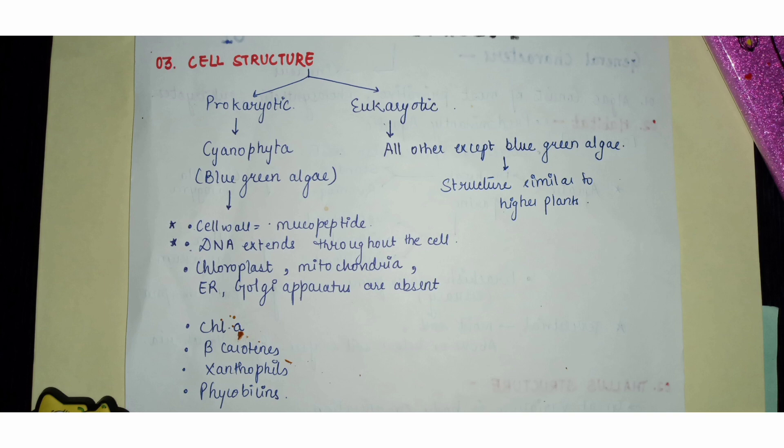Like higher plants, most algal cells have a cell wall made of cellulose. However, there is a distinguishing prokaryotic type of cell also categorized under algae — the division called Cyanophyta, commonly referred to as blue-green algae, which we know is actually a bacterium but is still studied under algal forms.